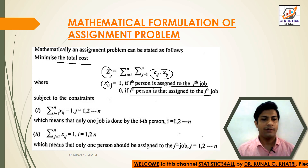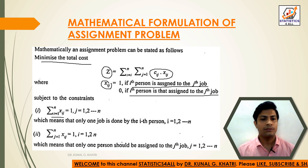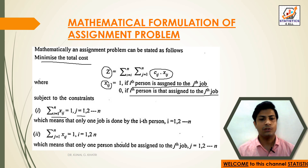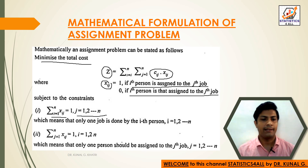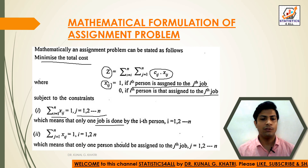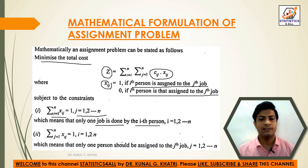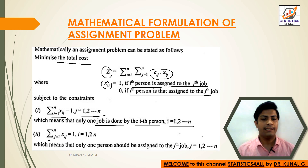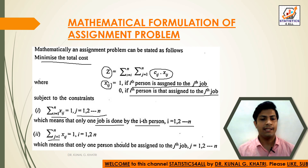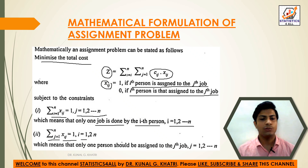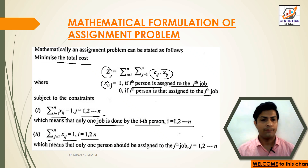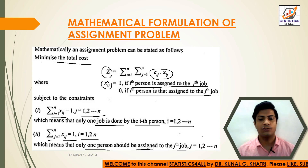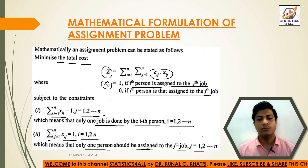Subject to the constraints: first, Σ(i=1 to n) Xij = 1, for j = 1 to n, which means that only one job is done by the ith person, where i = 1 to n. Second, Σ(j=1 to n) Xij = 1, for i = 1 to n, which means that only one person should be assigned to the jth job, for j = 1 to n.